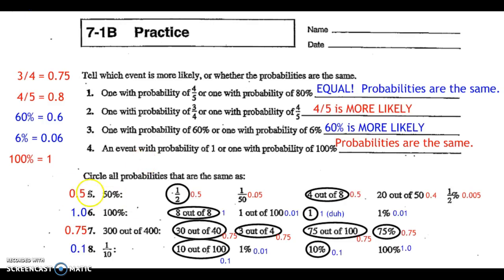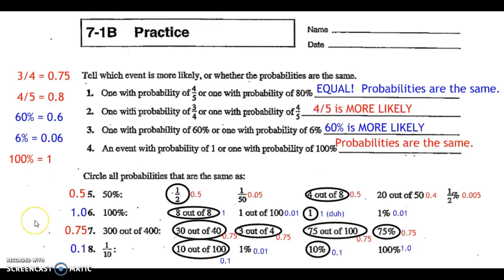You can see the answers here. I've converted each of these probabilities to decimals, and I've converted all the other probabilities to decimals as well. Once you do that, you can see which ones are the same — for example, every one of these gives you 0.75. You can also see that some are not the same, like 0.05 and 0.005. Hopefully this was helpful. Stay tuned for part 2 of the probability review. Have a great break.